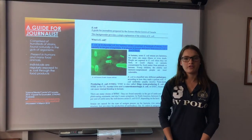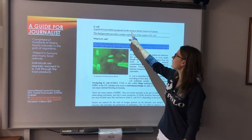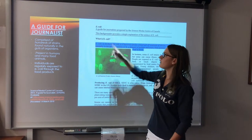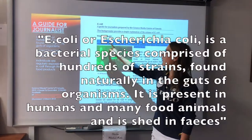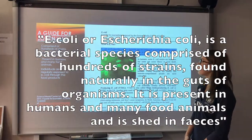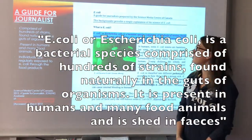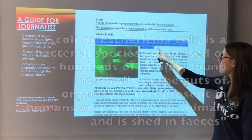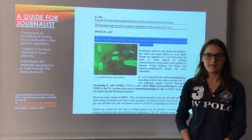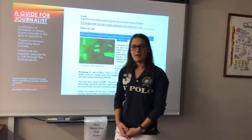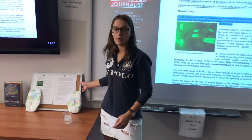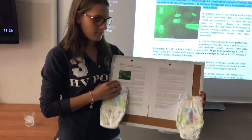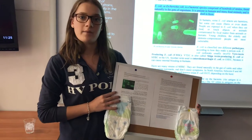It is important to understand what SGI coli is. According to the Science Media Centre of Canada in the Guide for Journalists, the article states: E. coli or SGI coli is a bacterial species comprised of hundreds of strands found naturally in the guts of organisms. It is present in humans and many food animals and is shed in faeces. Through this article, it's evident that individuals are exposed to E. coli through the food products we eat, or by touching animals or humans contaminated by fecal matter.